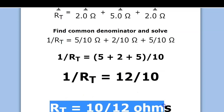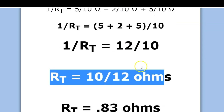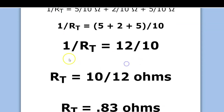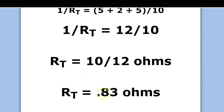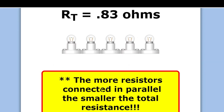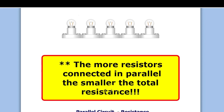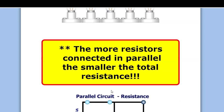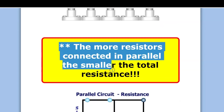At the end, we've got to flip it around. If 1 over RT is 12 over 10, then RT would be 10 over 12. The more resistors that are connected in parallel, the actually smaller the total resistance. That's kind of a paradox, but remember, that's really important.